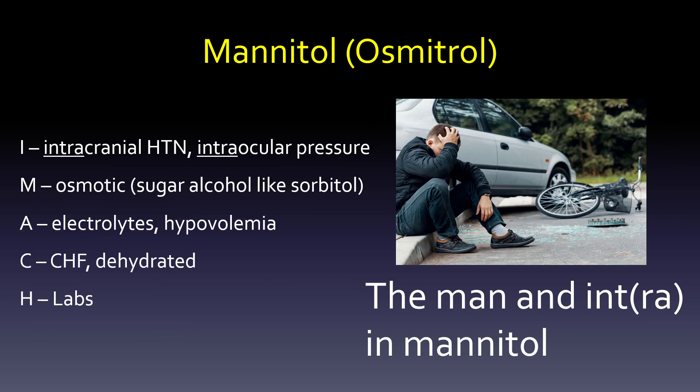Now let's go to our next drug — still in the West Coast, still at the proximal convoluted tubule: mannitol (Osmotrol). The indications are very similar: intracranial hypertension and intraocular pressure. It's an osmotic diuretic. You might recognize mannitol from sorbitol — they look very similar and are both sugar alcohols.